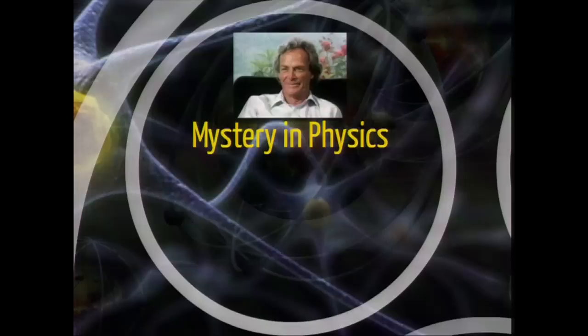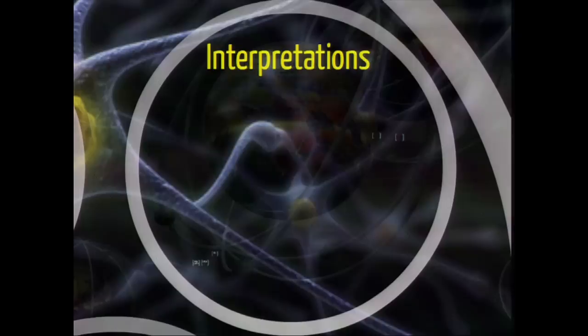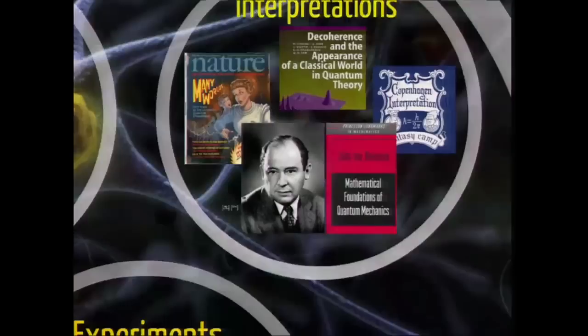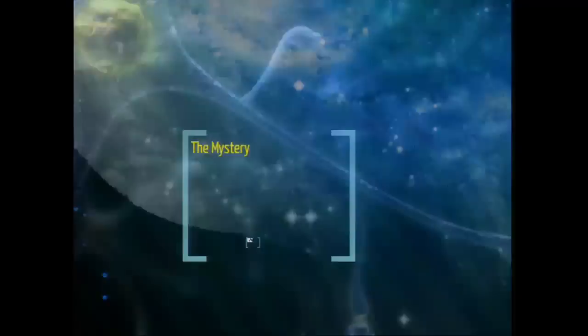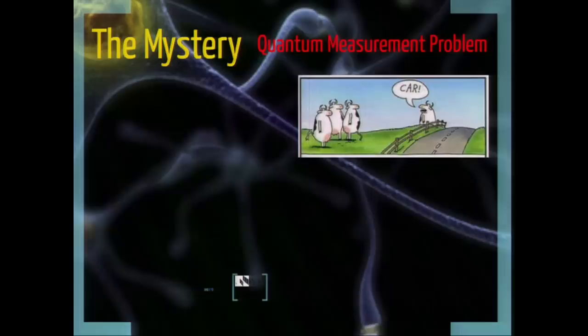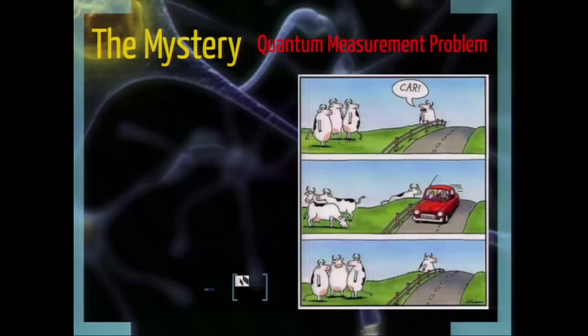The mystery in physics, Richard Feynman said, is impossible to explain in any classical way, and has in it the heart of quantum mechanics. In reality, it contains the only mystery. The mystery is sometimes called the quantum measurement problem. The idea is that cows will behave a certain way as long as nobody is looking, but as soon as somebody comes along, they start behaving like cows. This is an observational effect in cows, as well as elementary particles, and raises the specter of particle-wave duality.